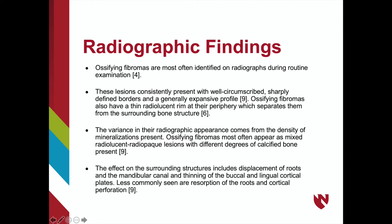Ossifying fibromas are often discovered radiographically. A few extremely consistent features are their well-defined borders, generally expansive profile, and radiolucent rim. However, they show variant patterns depending on the density of calcifications present. When they are an early lesion, they are more radiolucent and become more radiopaque as they age. The lesion may appear mixed radiolucent-radiopaque with different degrees of calcified bone.